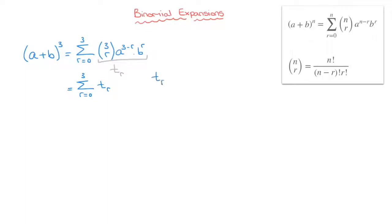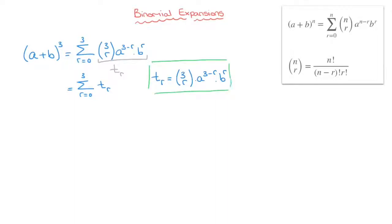To be clear, t sub r is equal to the binomial coefficient 3r times a raised to the power of 3 minus r times b raised to the power of r. I'll box that and call it the general term. Each term of the sum is obtained by replacing r in the general term by all integers from 0 up to 3 included, giving us t0 plus t1 plus t2 plus t3.